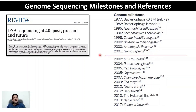The red letter day in genome sequencing history was in 2001 when the human genome was sequenced. In comparison to all these genomes, the human genome was much larger in size and also much more complex, given that it has more than 50% repeat content.